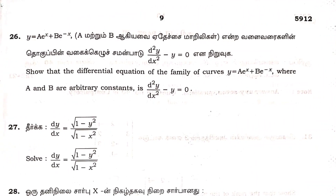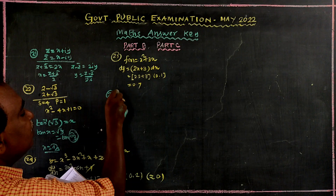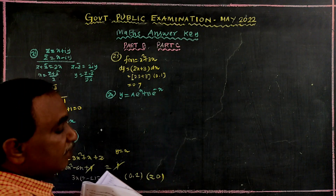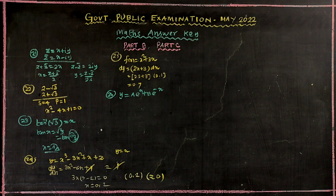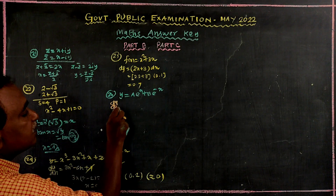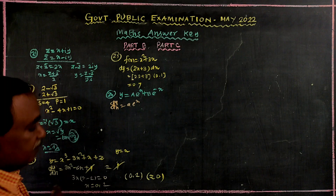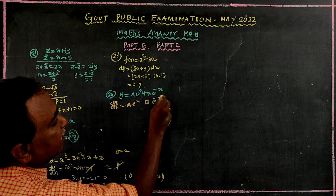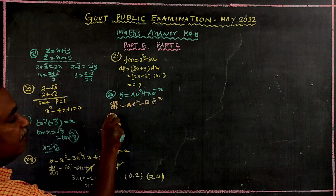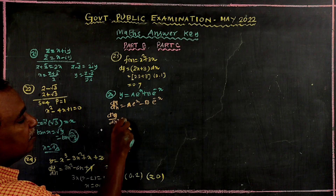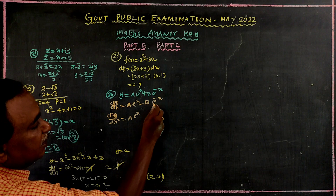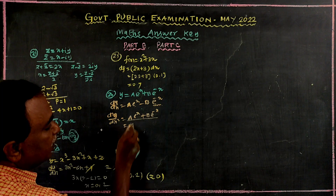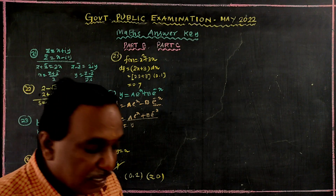Problem number 26: y is equal to a times e to the power x plus b times e to the power minus x. This is a differential equation. The first derivative dy/dx equals a times e to the power x plus b times e to the power minus x times minus 1. The second derivative d²y/dx² equals a times e to the power x plus b times e to the power minus x, which equals y. Therefore d²y/dx² minus y equals 0.